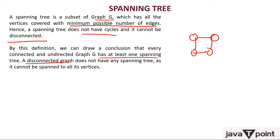A disconnected graph does not have any spanning tree. Suppose this is a disconnected graph — can you make a spanning tree of it? No. I cannot make a spanning tree because this node is isolated. Since there is no path, a tree cannot have an isolated node as I cannot span all the vertices.